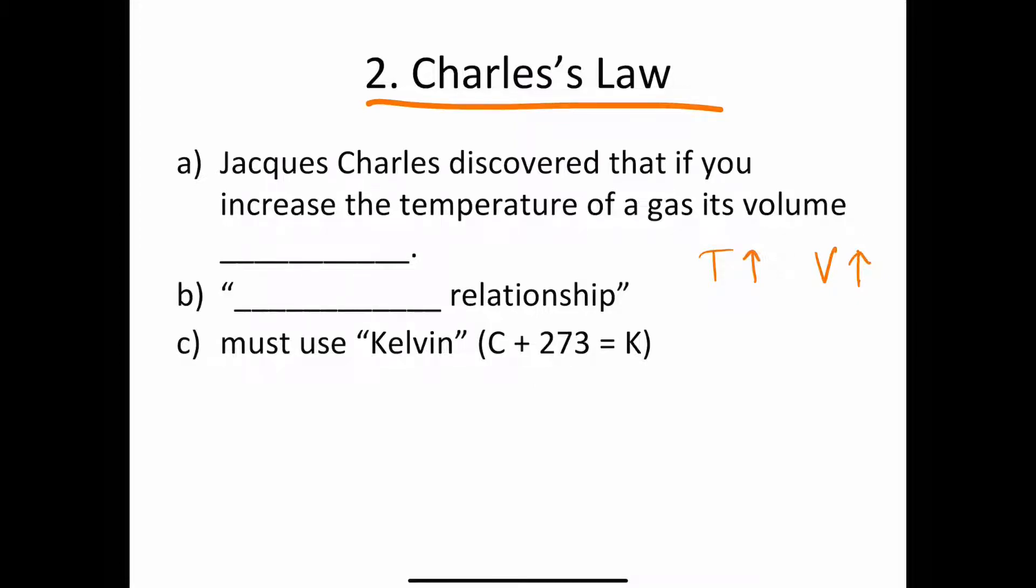So if you have the temperature going up, the volume is going to go up. So volume increases. This is a direct relationship. And in this chapter, we're using Kelvin for everything. So if you're given Celsius, add 273 to it, and then you get the temperature in Kelvin.